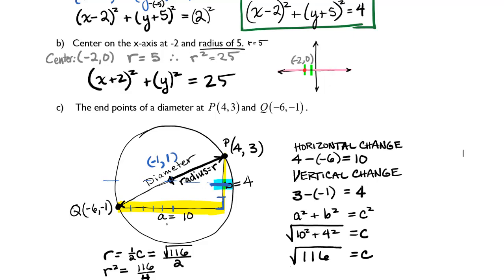So the center of my circle is at (-1, 1). That gives me x plus 1 quantity squared plus y minus 1 quantity squared equals 116 divided by 4.